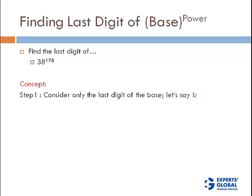The concept — Step 1: consider only the last digit of the base, let's call it b. So in the case of 38, the only digit we need to worry about is 8. This 3 is not going to play any role in finding out the last digit. So step 1: simply consider the last digit of the base, which is 8 in this case.